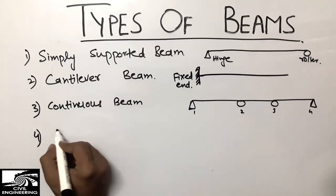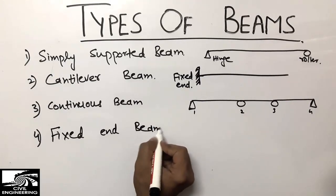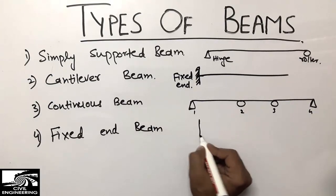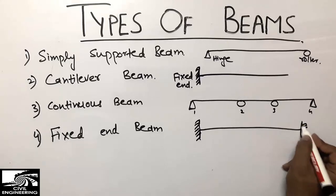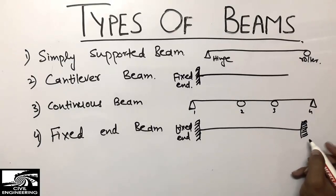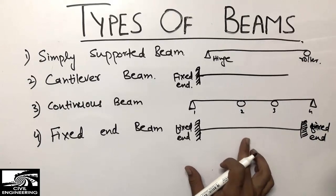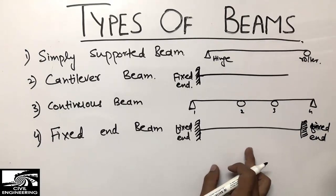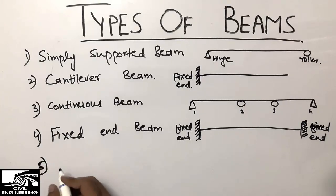The fourth type of beam is the fixed end beam. It is the type of beam which is supported at two ends and both ends are fixed supports. So we call it the fixed ended beam. There are two fixed ends, and we call this beam the fixed ended beam.